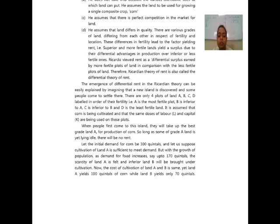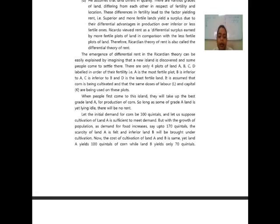The emergence of differential rent in the Ricardian theory can be explained by imagining that a new island is discovered and some people come to settle there. There are only four plots of land A, B, C, D labelled in order of their fertility. A is the most fertile plot, B is inferior to A, C is inferior to B, and D is the least fertile land. Corn is being cultivated and the same doses of labour and capital are used on these plots. When people first come to the island, they take up the best grade land A for production of corn, and as long as grade A land is lying idle, there will be no rent.